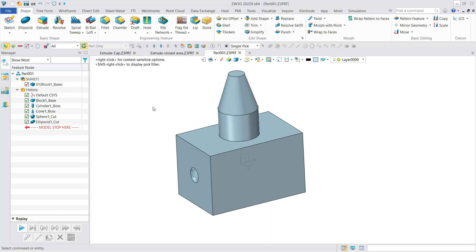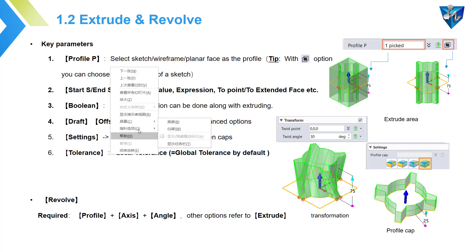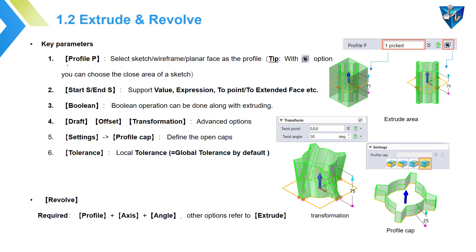Now let's move back to the PowerPoint. Next, I will show you the extrude and revolve commands. These two commands may be the most commonly used features during mechanical design. About extrude, there are several key parameters you need to know. The first one is the profile. In ZW3D, the extrude profile can be a sketch, wireframe, or even planar faces. You can also select just part of the sketch as a closed area to extrude.